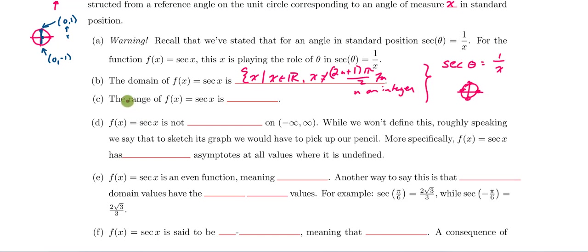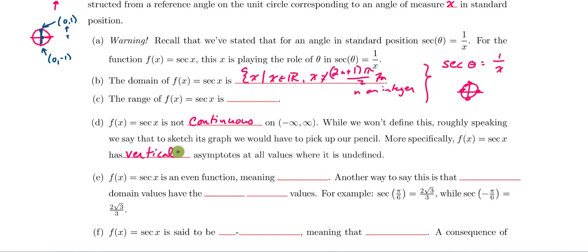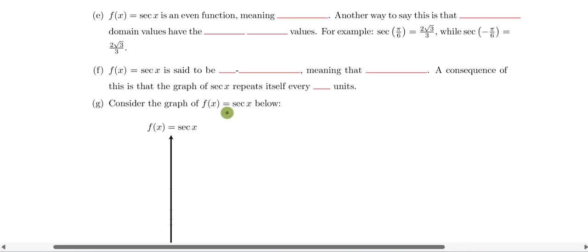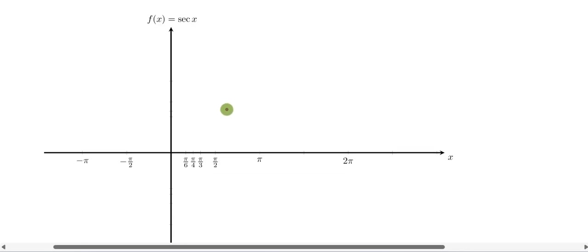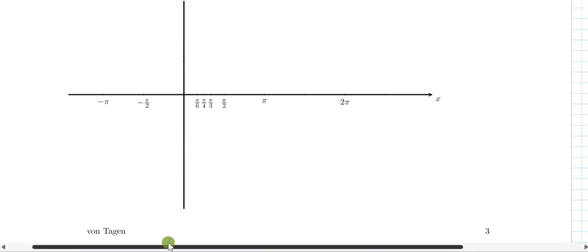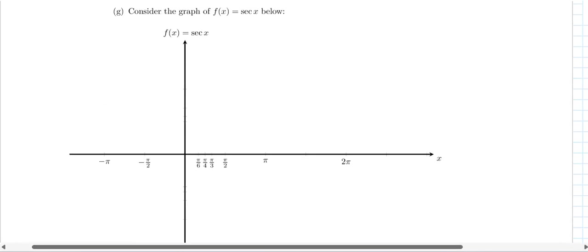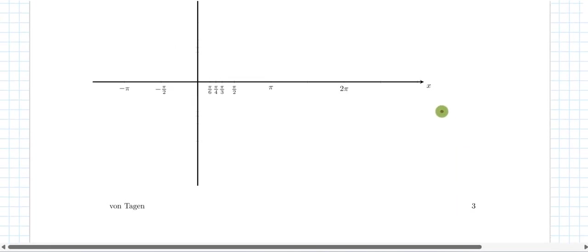Let's put a pin in determining the range of the secant function and come back to it as we construct the graph. The secant function is not continuous on the entire real line — meaning when drawing it, you sometimes have to pick up your pencil. Just like with tangent, the secant of x has vertical asymptotes everywhere it's undefined.